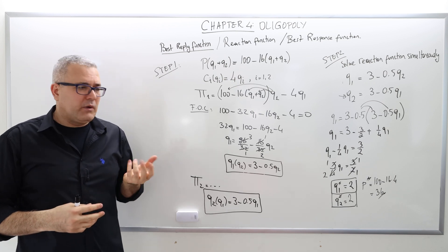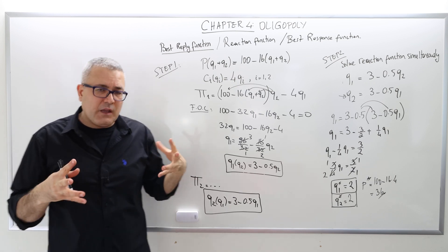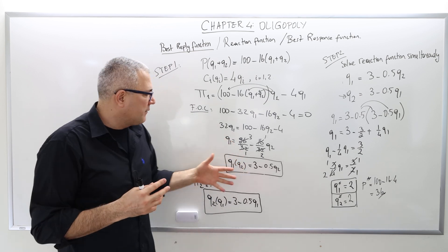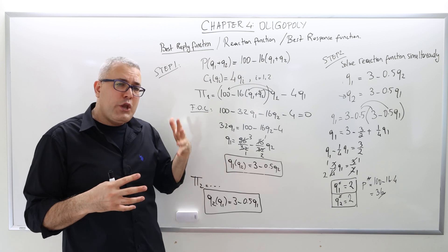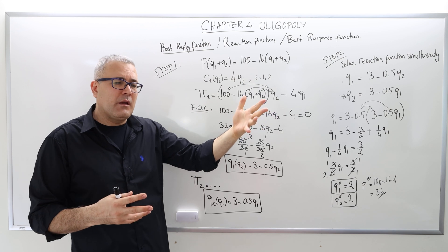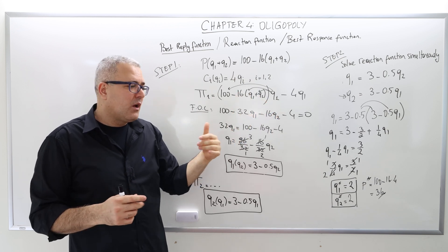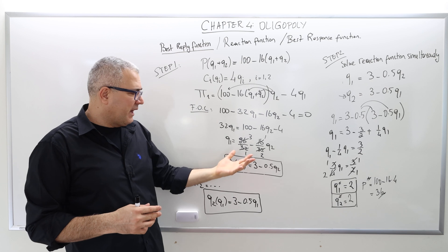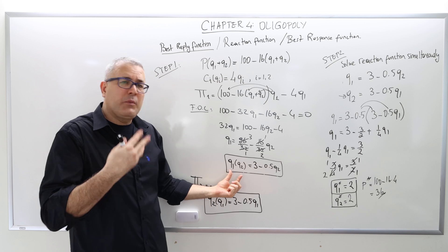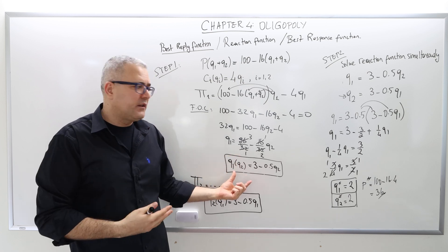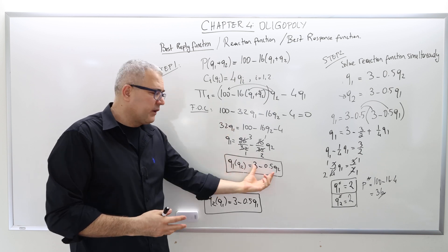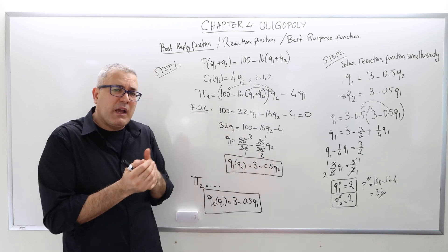The idea is the following. This is a simultaneous move game, which means each player does not know the opponent's actions. So what action will my opponent take? I don't know. What we do is make a guess. Firm 1 makes a guess Q2, and then calculates the best reply — the best response to that. So if my opponent is producing Q2, I'm going to produce Q1 according to this function. That's my best response.